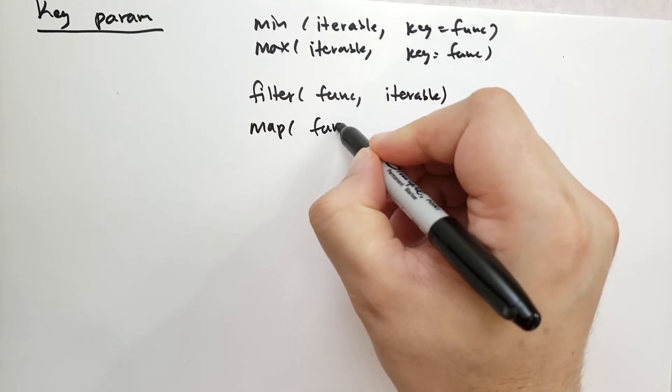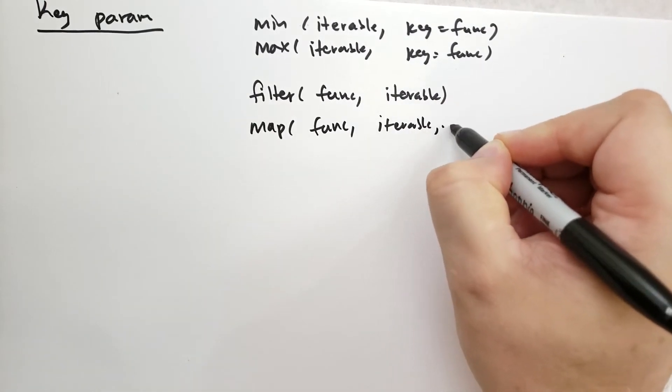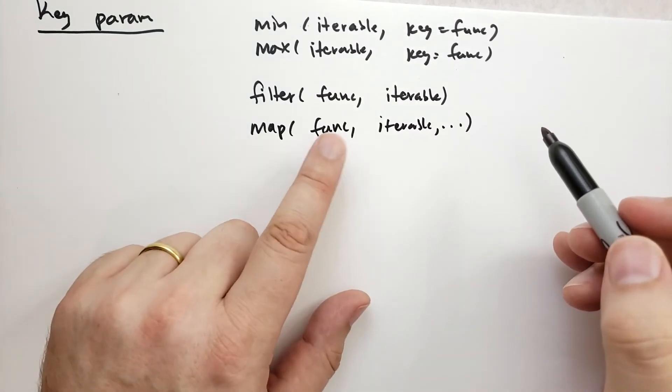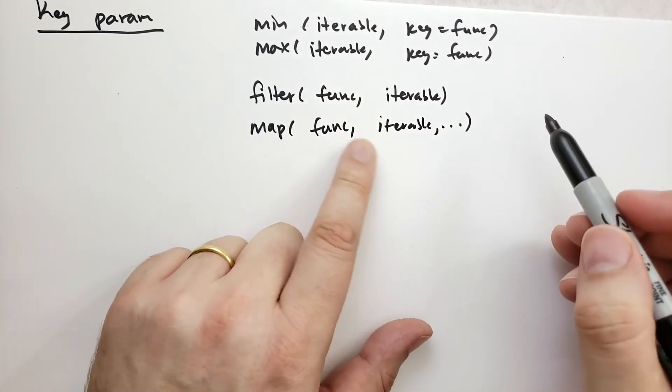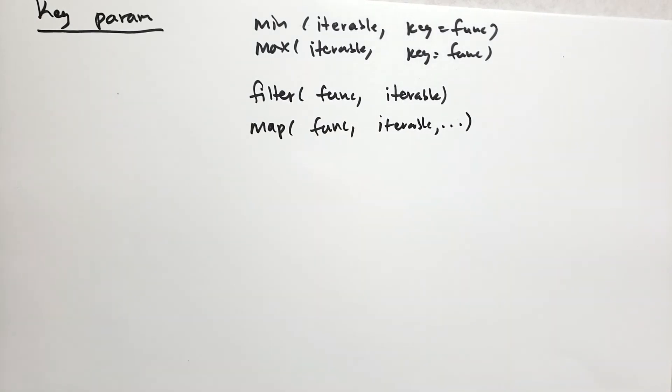Map is a little bit different. Map takes a function and several iterables, one or more. What it will do is apply that function to each item in the iterable and give you a new sequence based on the result of that function. So map is quite a bit different than the key method. Let's go through some examples - these examples are kind of important, some things you should remember.